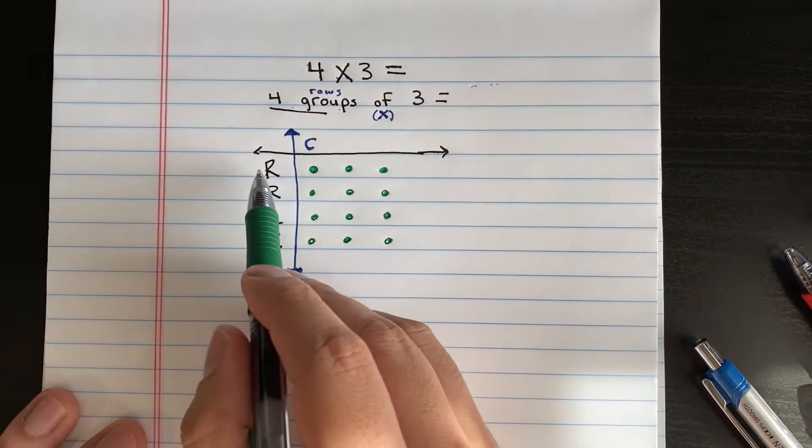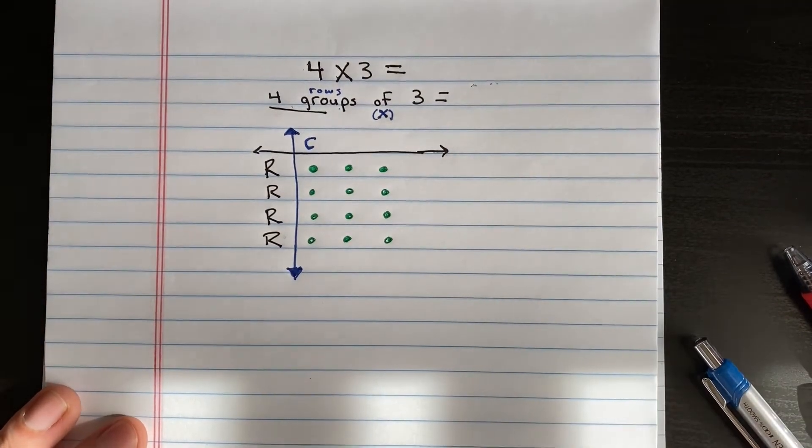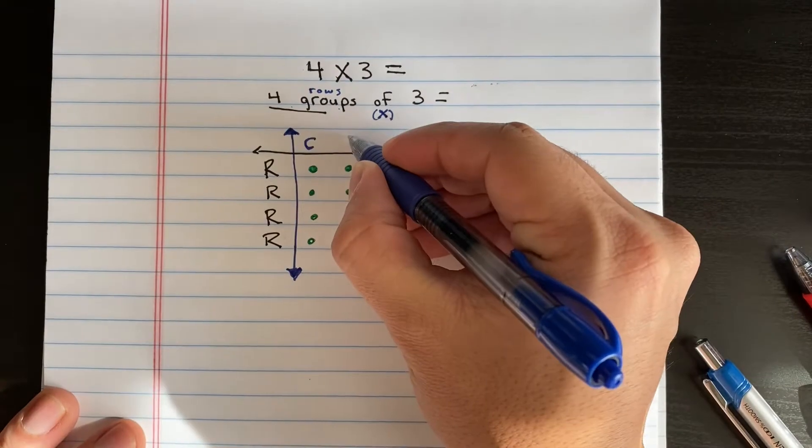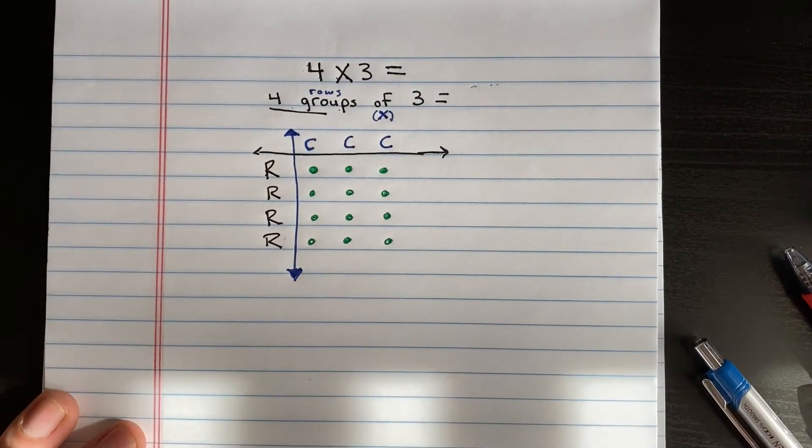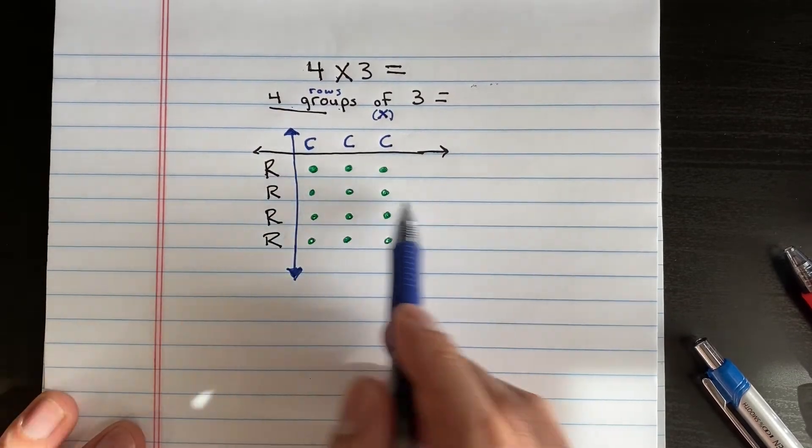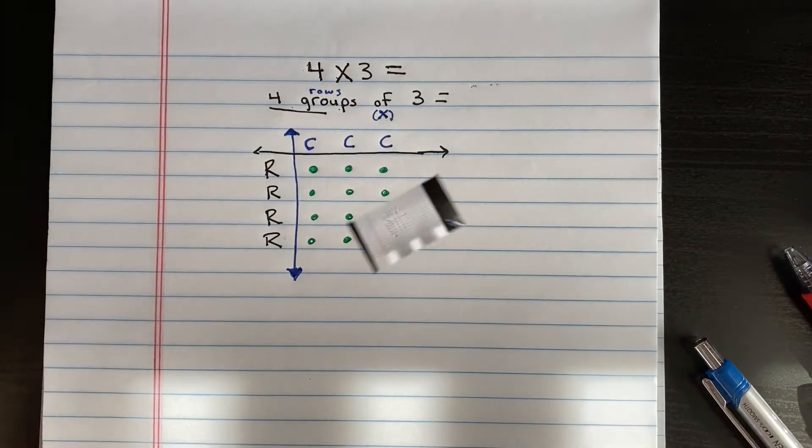So I have four rows, and I put three in each row. But as you can see, we created some more columns. Now I'm going to go ahead and put my three columns, two more C's for columns. So take a look. I have four rows and three columns.